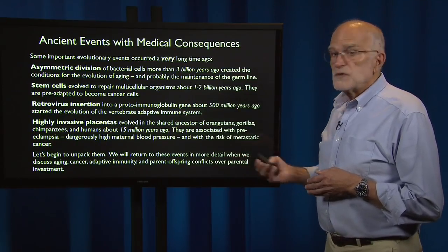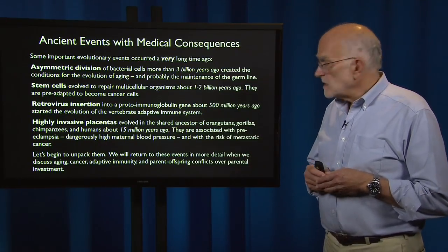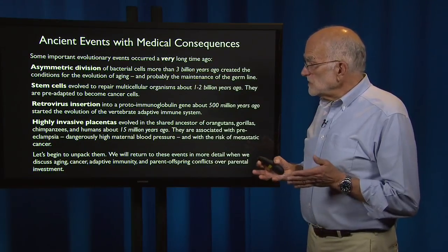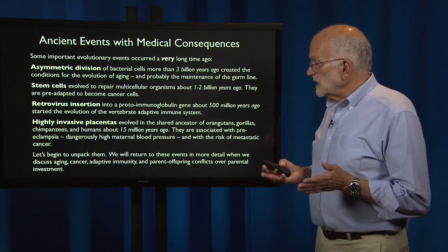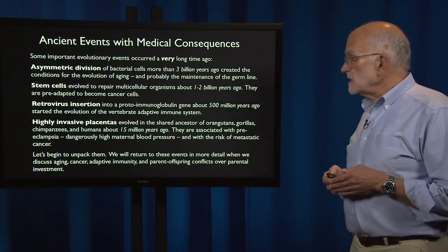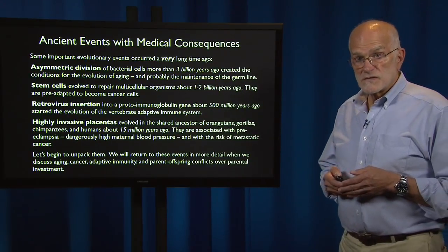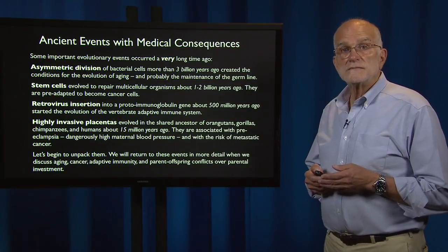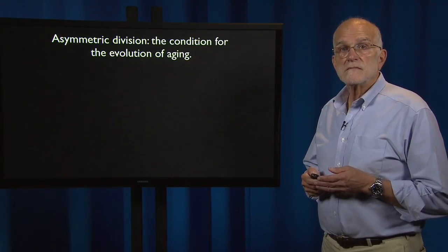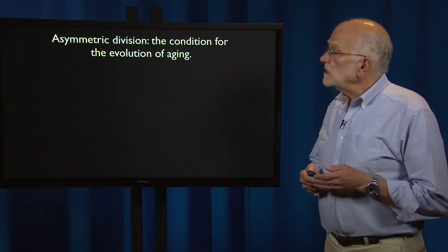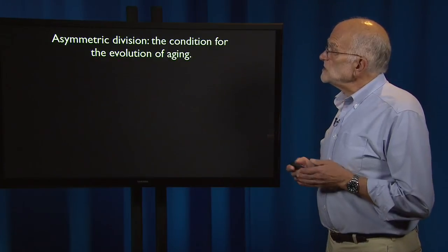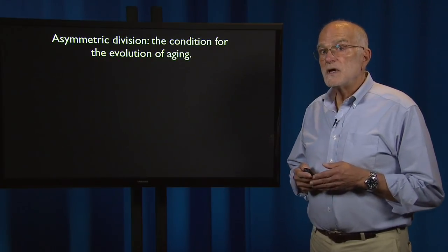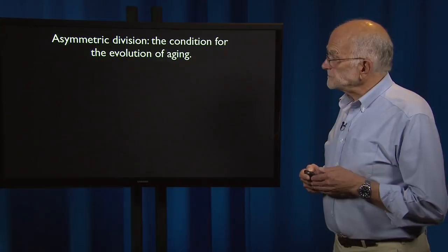We are going to return to these events in more detail when we discuss aging, cancer, adaptive immunity, and parent-offspring conflicts over parental investment. So first: asymmetric division. This is the condition for the evolution of aging.